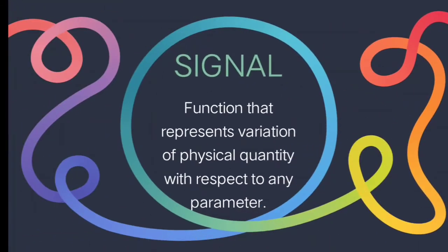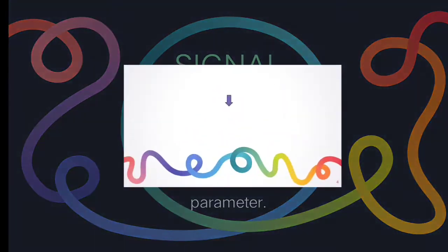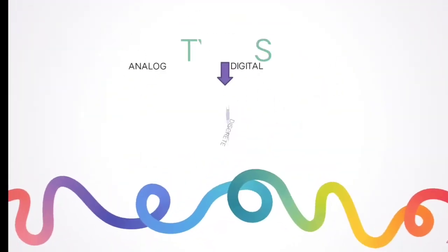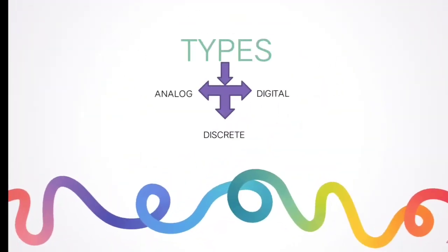Before getting deeper into this topic, let us have a quick recap on signal. A signal is a function that represents the variation of a physical quantity with respect to any parameter. The types of signals are: analog, discrete, and digital.